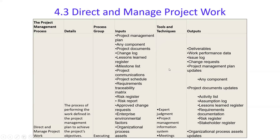Outputs of Direct and Manage Project Work include deliverables, work performance data, issue logs, change requests, and project management plan updates. Project document updates include the activity list, assumption log, lessons learned register, requirements documentation, and stakeholder register — all of these can get updated as work is performed.